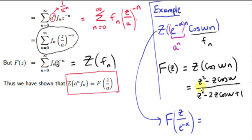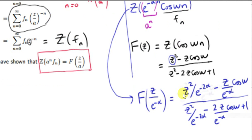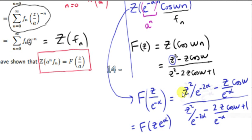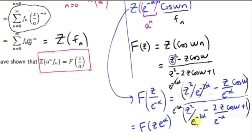Here is F of z, so we need to replace z with z over e to the minus alpha, which is the same as z multiplied by e to the power of alpha. So z squared will be replaced with z squared over e to the minus 2 alpha. If you multiply above and below by e to the minus 2 alpha, you will simplify things: multiply on top by that, do the same underneath, giving e to the minus alpha times each term.